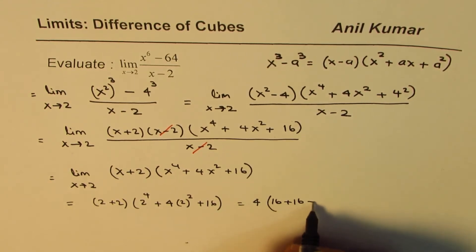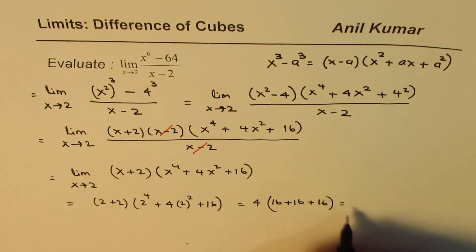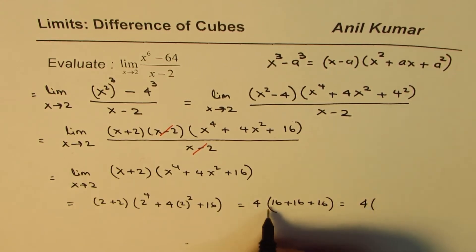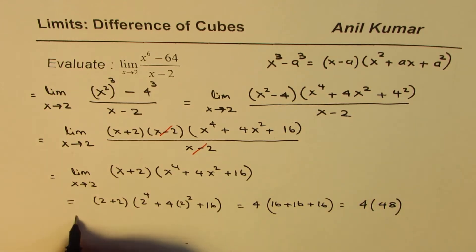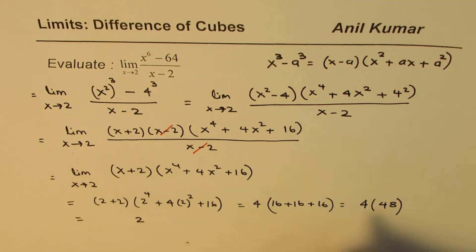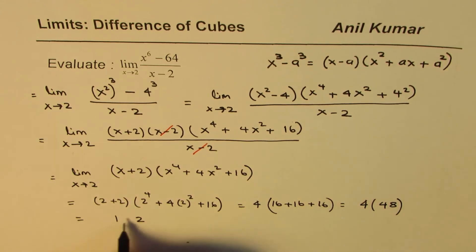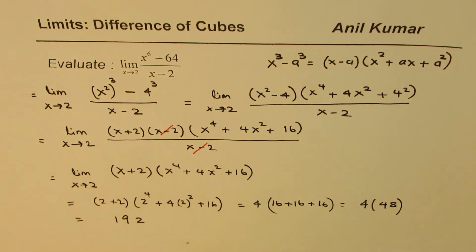You could write this as 16 plus 16 plus 16, which is 4 times 3 times 16, which is 48. And when you multiply them, 8 times 4, 32, carry 3, 16 and 3, 192. So the limit of this function is 192.